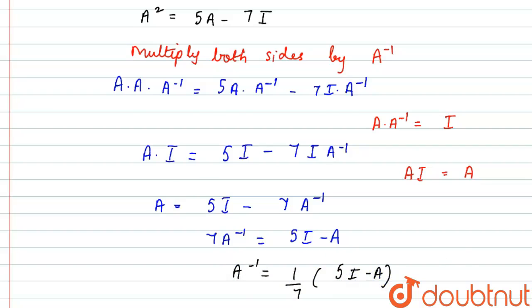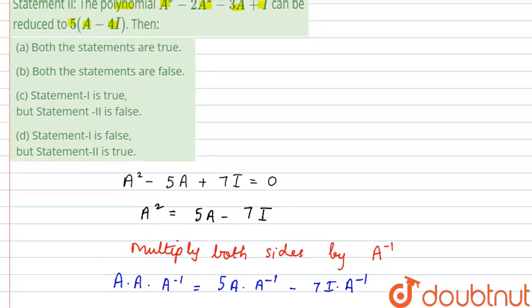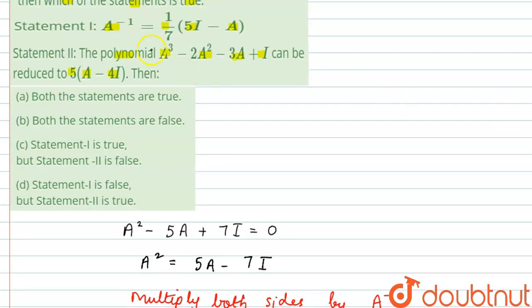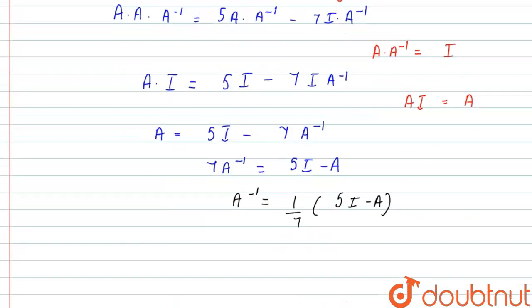Rearranging, 7A inverse equals 5I minus A, so A inverse equals 1/7 times (5I minus A). This is exactly the first statement, so statement 1 is true.